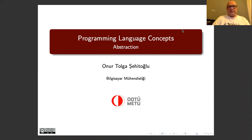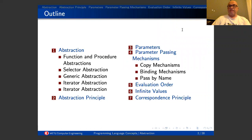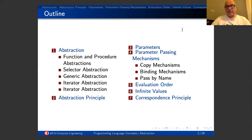Hello everyone. This is our second recorded offline course lecture for Programming Language CANG 242. Our chapter is Abstraction, which is an important principle in programming, software development, and even engineering and other designs. We will talk about the general idea of abstraction, which types of abstractions exist in programming languages, and an essential part of abstraction which is parameter passing, along with evaluation orders.